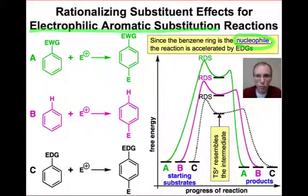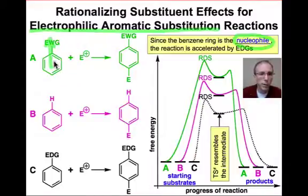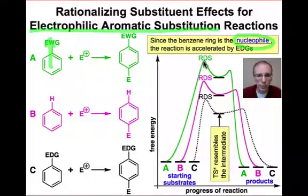We're looking for the most nucleophilic ring and the ring that's best able to stabilize the developing positive charge in the transition state, leading to that positively charged intermediate. Any substituent that withdraws electron density from the ring is going to make that ring a poorer nucleophile and is going to destabilize that positive charge developing in the transition state. This ring is going to be deactivated toward electrophilic aromatic substitution.